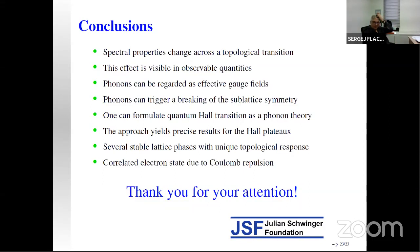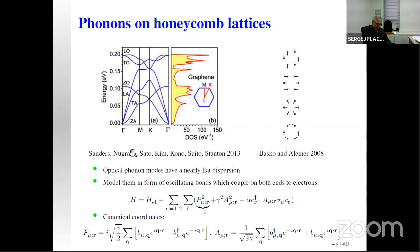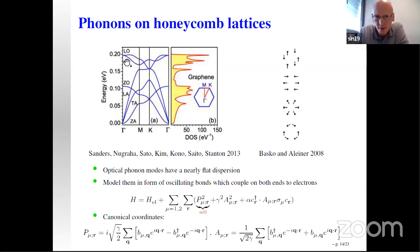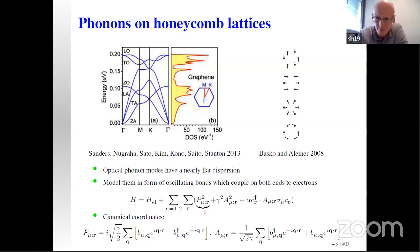Question from the audience: you say phonons can be regarded as effective gauge fields, but they are dynamical gauge fields. How does that compare to static gauge fields? Answer: the optical modes are gapped, so within a crude approximation the dispersion can be neglected and the canonical momentum set to zero. Effectively you treat the phonons as static — you get rid of all dynamics and only consider static phonons accessible to external driving.